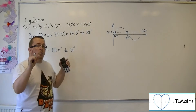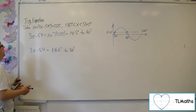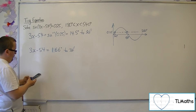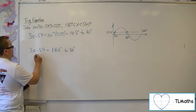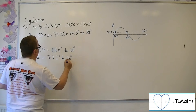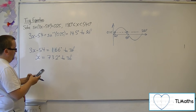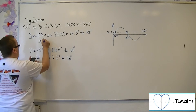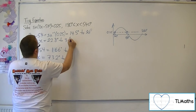What I then want to do is apply the transformation to both of these values. Starting with the 166 degrees — add on the 54, then divide through by 3, and we get 73.2. So x is 73.2 degrees to 3 sig fig. And for the 14.5 — add on the 54, divide through by 3 — and so x is 22.8 degrees to 3 sig fig.